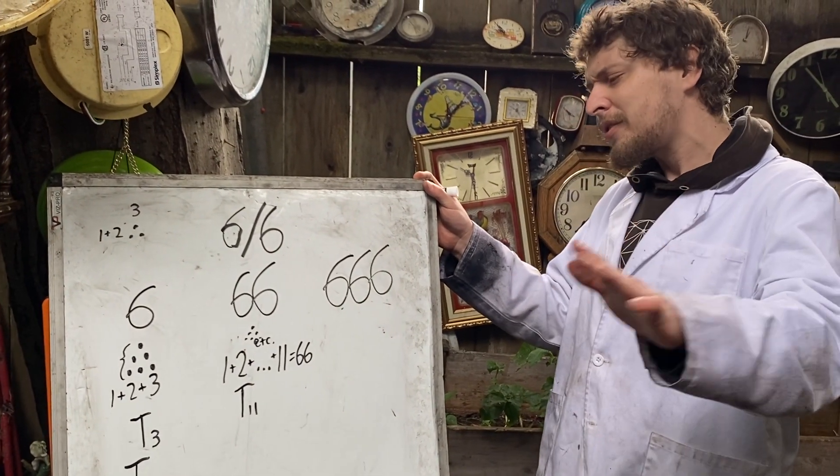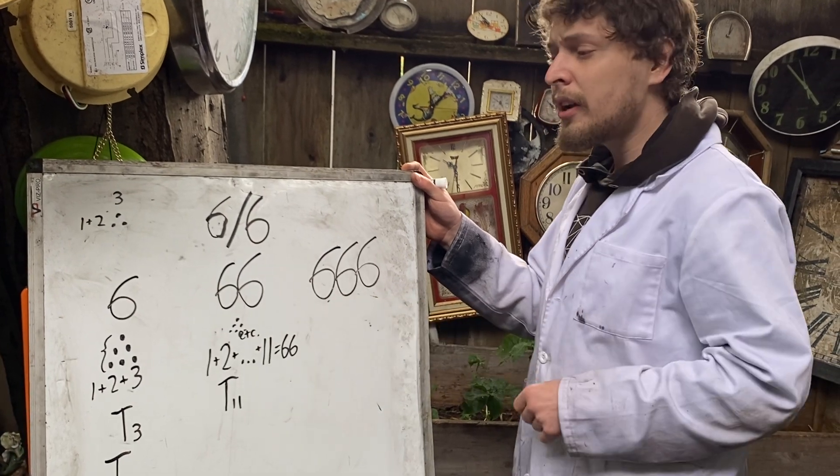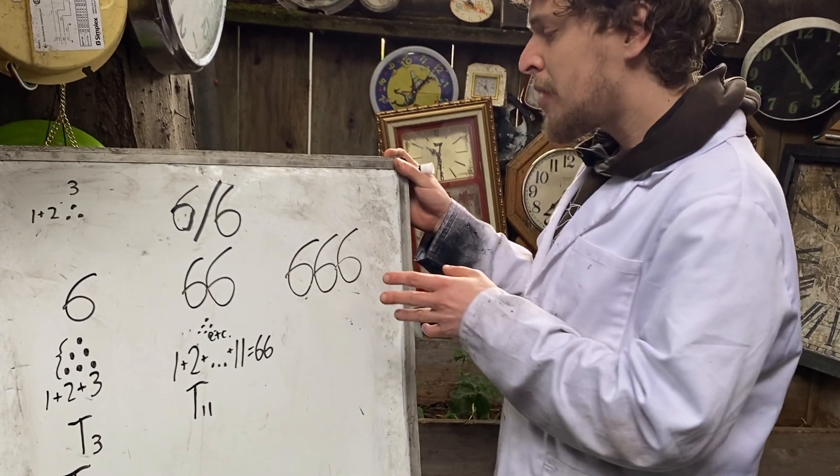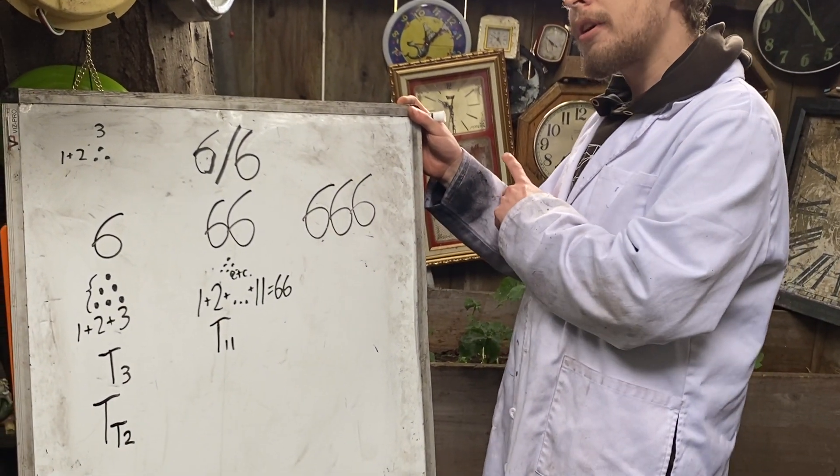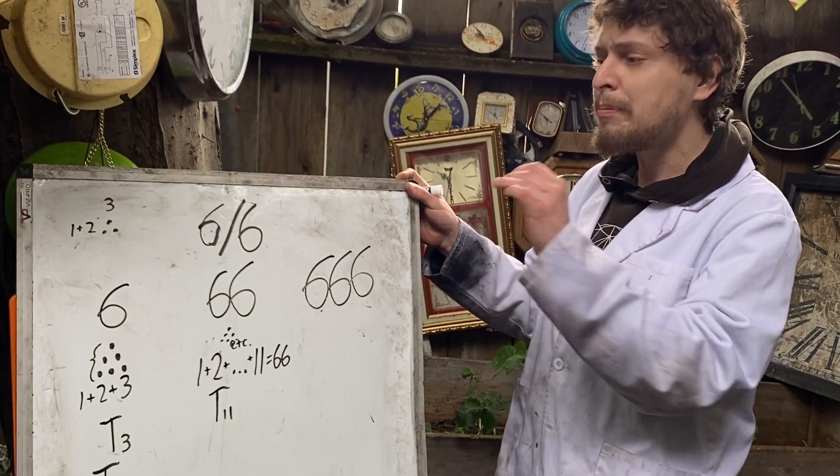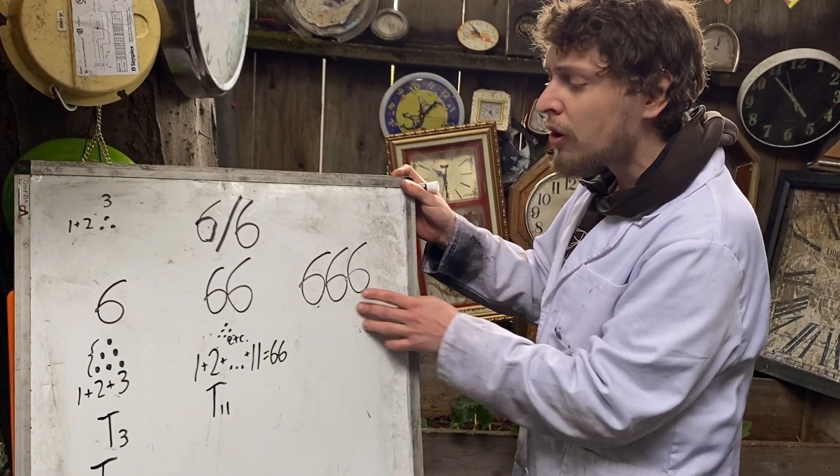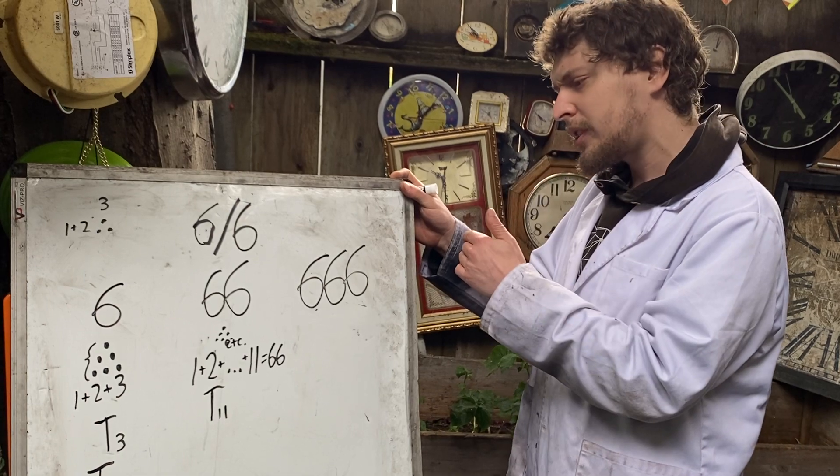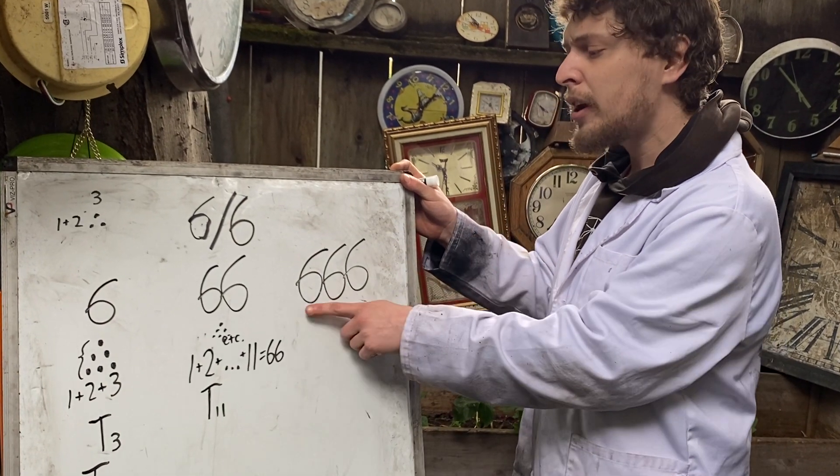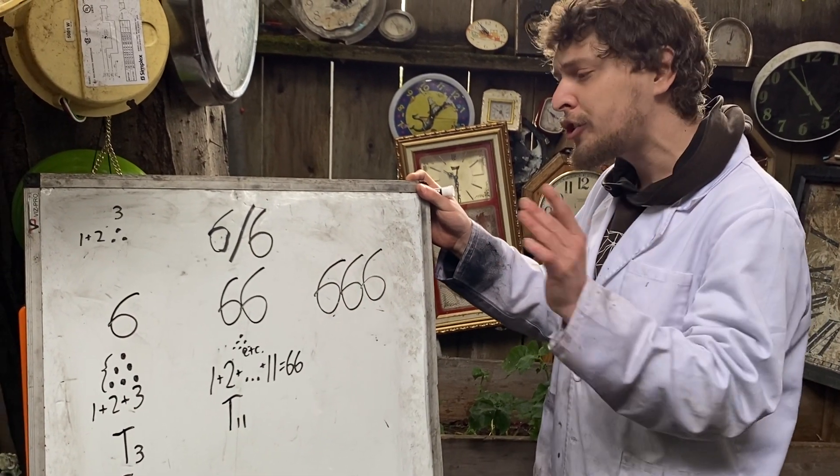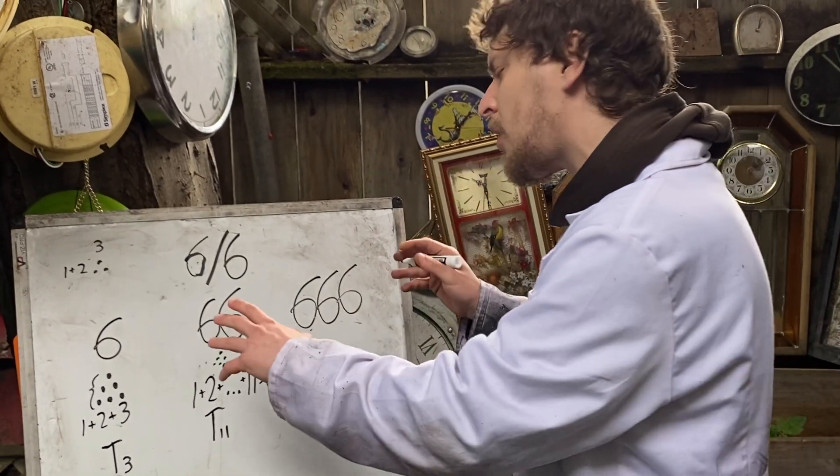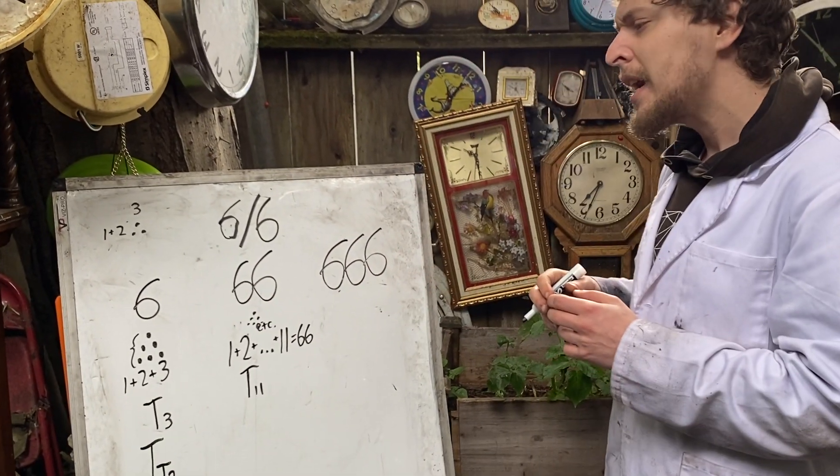And in fact, beyond this point, in our base 10 system, there are no other triangular rep digits, numbers larger than 666 in base 10 that only have the same digit a bunch of times, but are a triangular number.